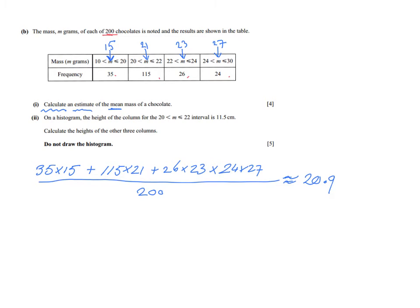Now, carrying on. It says on a histogram, the height of the column from 20 to 22 is 11.5 centimeters. Calculate the height of the other three columns, so those three. Do not draw the histogram. So please indeed do not draw the histogram. Can I erase this? Is that possible? No, I can't. I am trying to erase to create a little bit more space, but that is not possible. Okay, it does not matter. We are just going to carry on then in red.